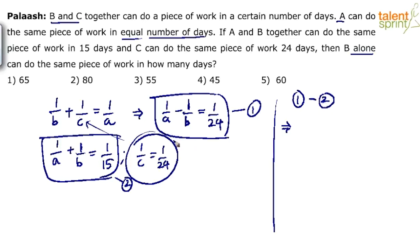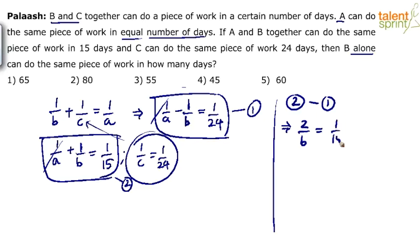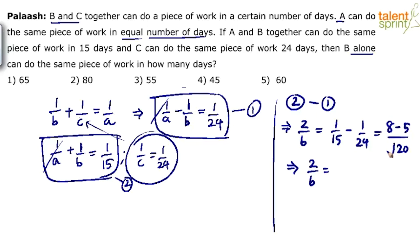Taking equation 2 minus equation 1: the 1/A terms cancel, and 1/B minus (-1/B) gives 2/B, which equals 1/15 - 1/24. The LCM of 15 and 24 is 120, where 15 goes 8 times and 24 goes 5 times, giving 8/120 - 5/120 = 3/120 = 1/40. So 2/B = 1/40, which means B = 80 days.